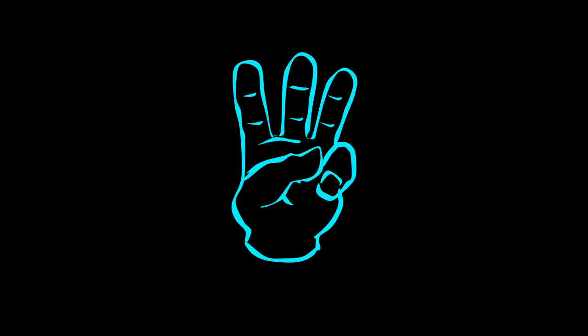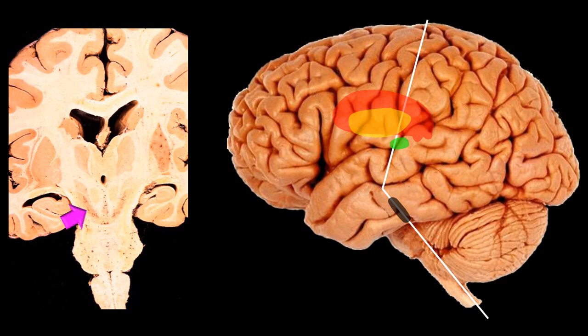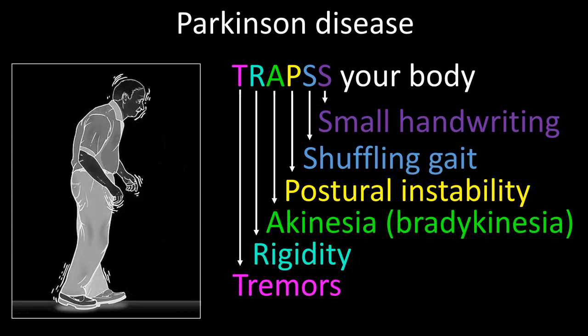The third structure is the substantia nigra, indicated in the cut specimen on both left and right sides. Bilateral damage producing degeneration of dopamine-secreting cells in the substantia nigra leads to Parkinson's disease, a condition producing many motor manifestations to which we have already alluded.